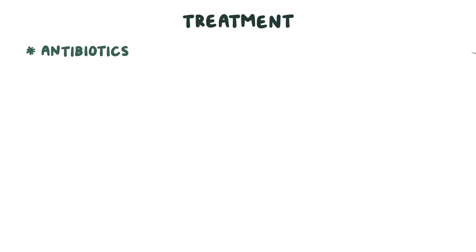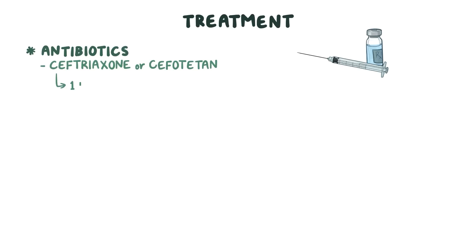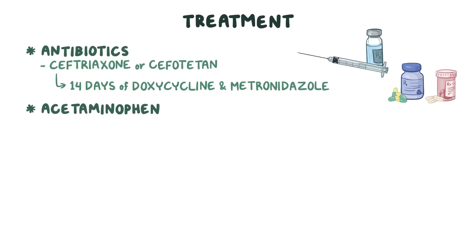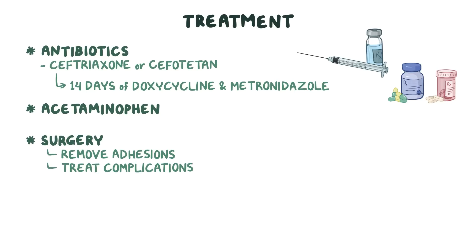Treatment involves giving a mix of antibiotics — usually an injection of ceftriaxone or cefotetan, followed by 14 days of oral doxycycline and metronidazole to treat the bacterial infection responsible for PID. Acetaminophen can be given to manage the pain until the antibiotics have treated the infection. Occasionally, surgery is needed to remove adhesions causing pain or to treat complications such as tubo-ovarian abscesses and hydrosalpinx.